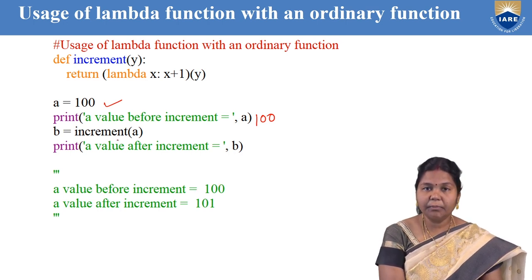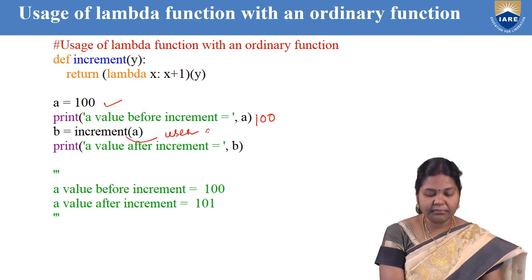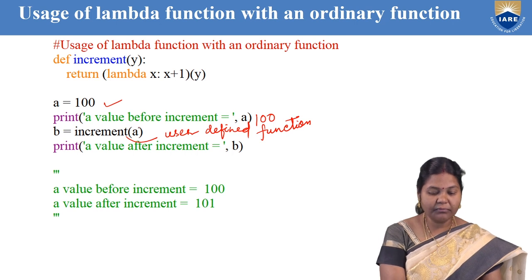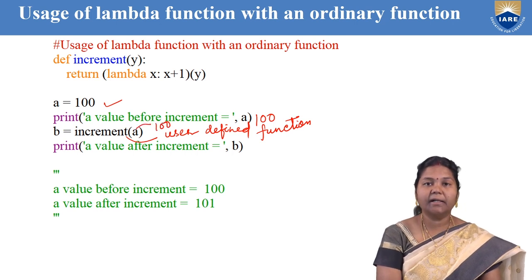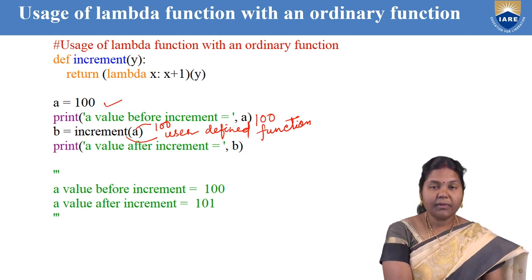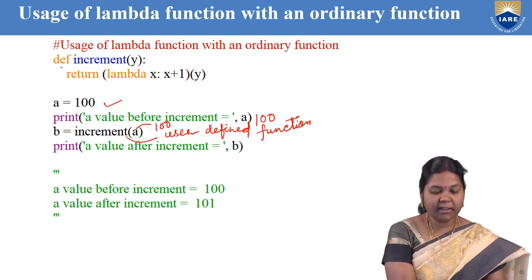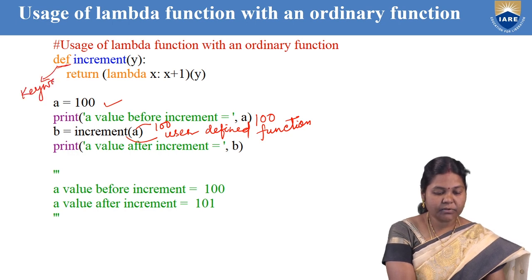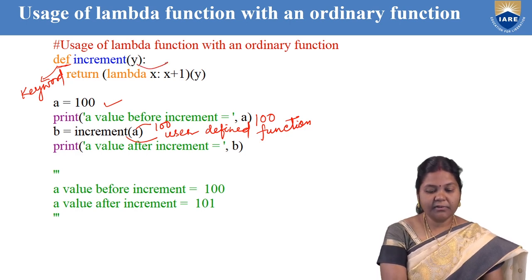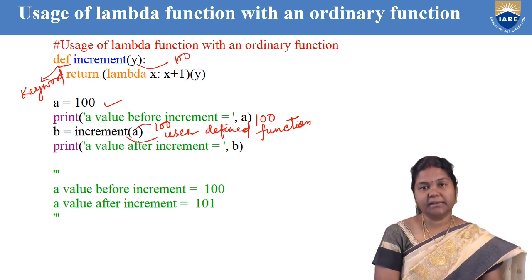The function named increment is our user-defined function. To this user-defined function, we are passing an argument that is a, and the value of a is 100. We have defined this function using the def keyword, which is the keyword to define a user-defined function. So def increment — increment is the name of the function — and the value of y is 100 we are passing here.